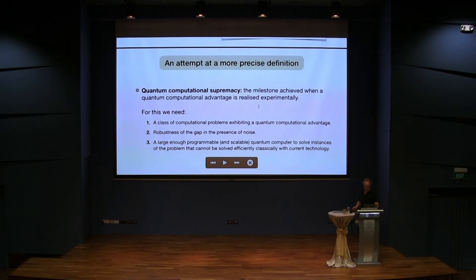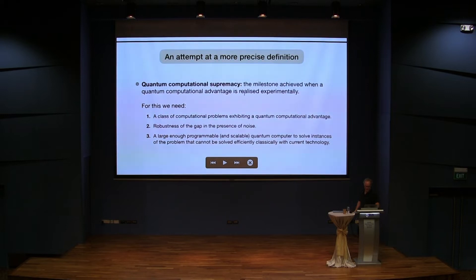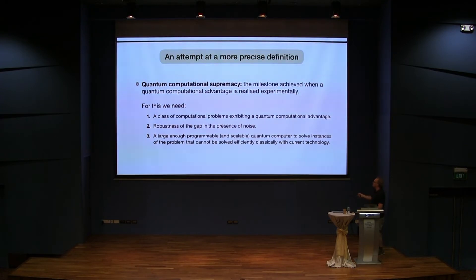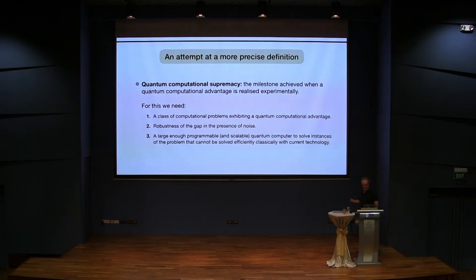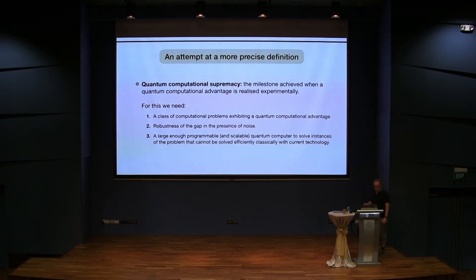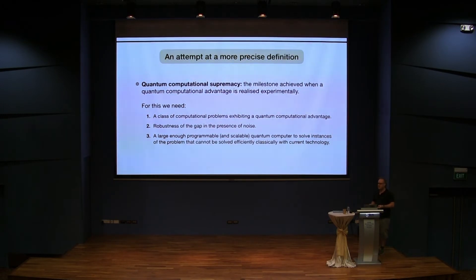For quantum computational supremacy, we need multiple ingredients. First, we need some class of problems that have a quantum advantage. But then we also need to make sure that this class of problems is somewhat robust under noise, because in every attempt to experimentally verify the advantage we will encounter noise. We need to make sure that in the noisy case, the classical simulation is still difficult. This is actually a very important part of the discussion.